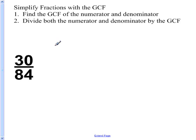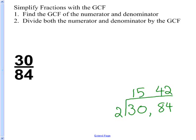So first, to simplify fractions with the GCF, find the GCF of the numerator and denominator, and then we're going to divide both the numerator and denominator by that GCF we find. We can use the cake method that we learned previously to find the GCF. 2 goes into 30 and 84. 2 goes into 30 15 times, and into 84 42 times.